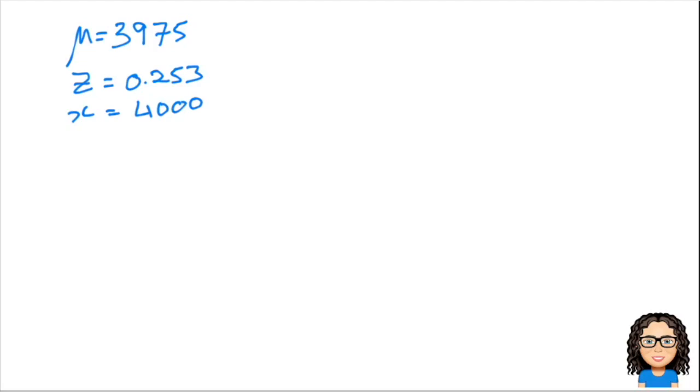So let's write down what we know. We know we've got a mean of 3,975. We know we've got the equivalent z value of 0.253, and that's equivalent to the x value of 4,000. And at 4,000 we know there's 40% above. So the only formula that we've got that we can use is this one: z equals x minus the mean over the standard deviation.